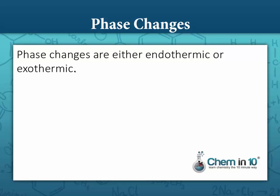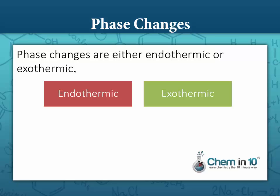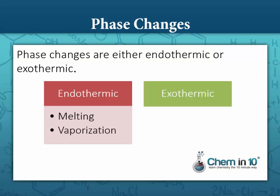Phase changes are either endothermic or exothermic. They're endothermic if they absorb energy and exothermic if they give off energy. Examples of endothermic phase changes are melting and vaporization — both need an input of energy. Exothermic phase changes would be freezing and condensation, which happen by removing energy from the system.